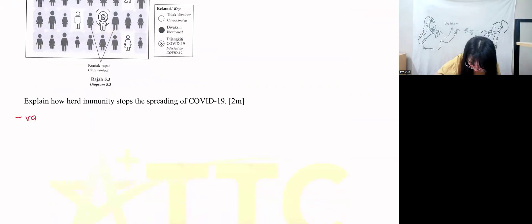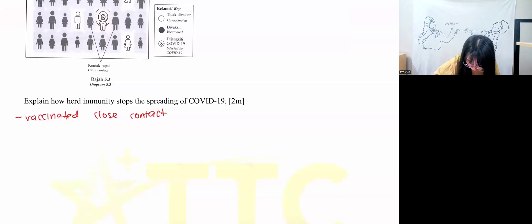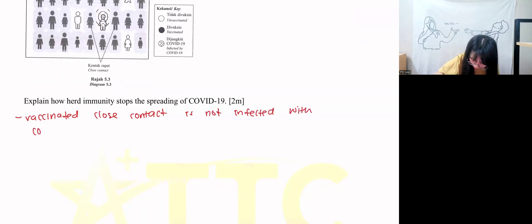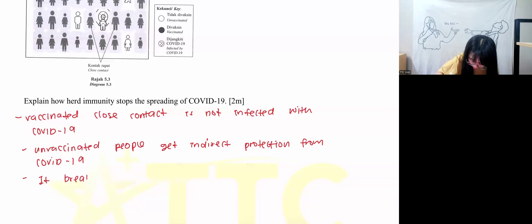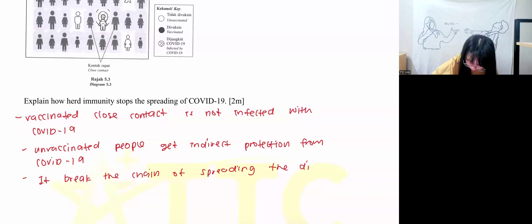To write the answer in sentences: Vaccinated close contacts are not infected with COVID-19, so unvaccinated people get indirect protection from COVID-19. This breaks the chain of spreading the disease.